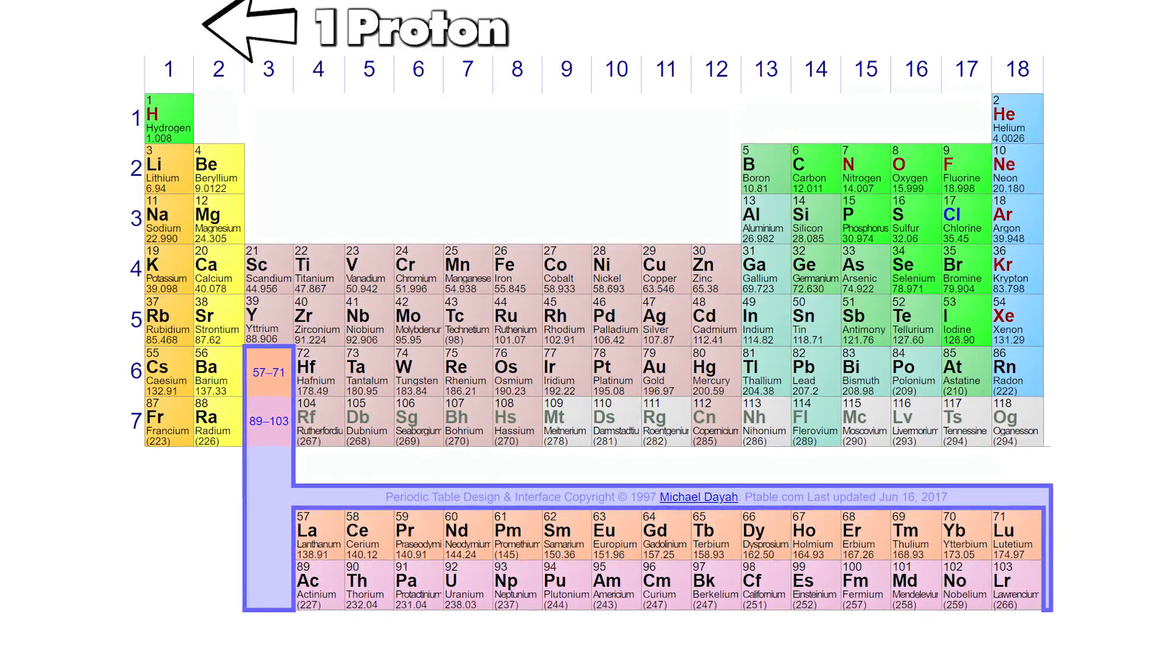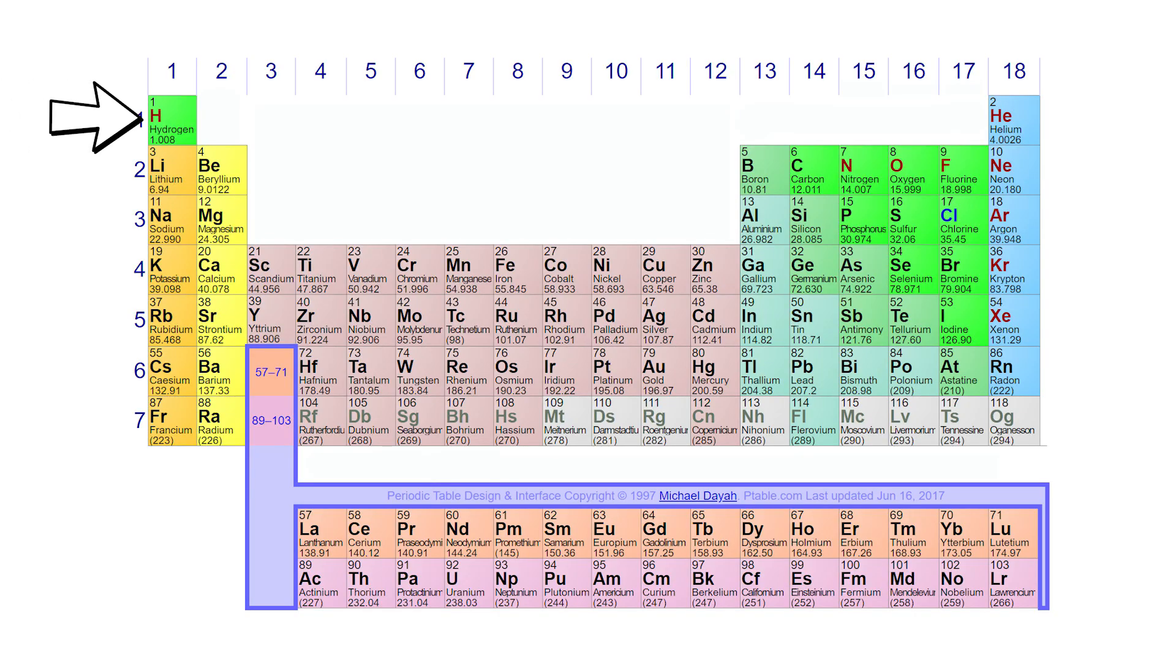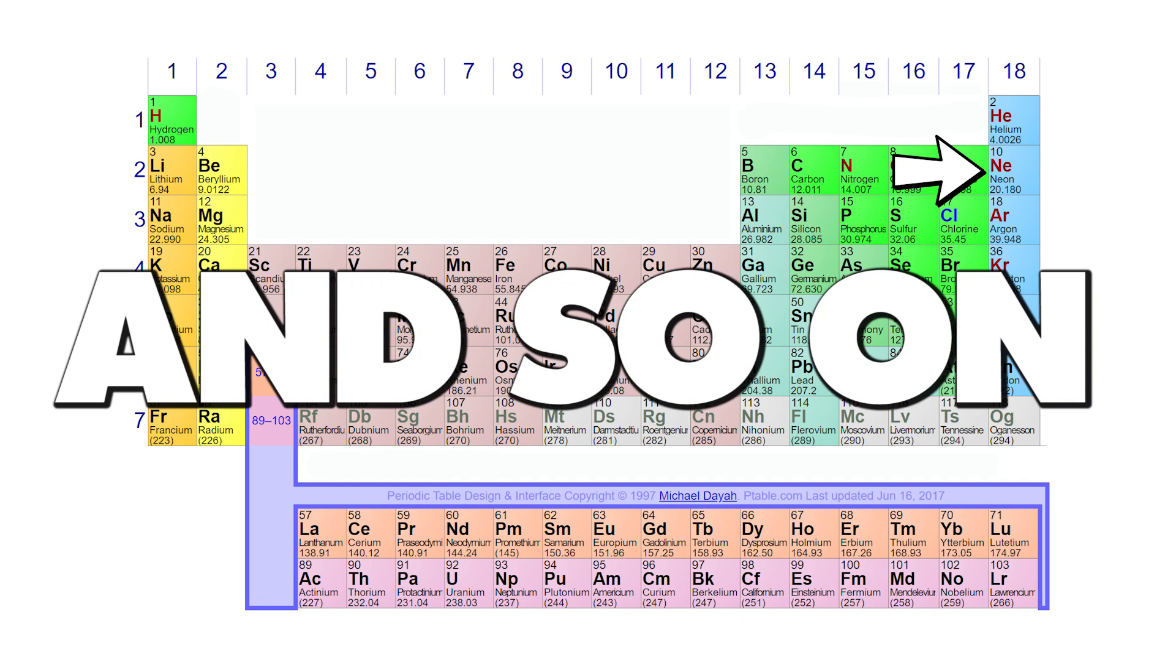All the periodic table really does is list the elements in order of how many protons they have. And we read the periodic table just like a book. Huh. We start at the top left and go to the right. Then when we're at the end of this line we go to the start of the next line down and read to the right again. And so on. That's it.